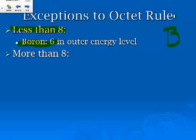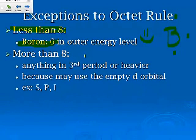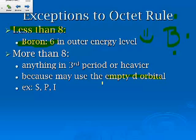If you look at boron on the periodic table, it has three valence electrons, and it will form a covalent bond at those three electrons. Now, if there's more than eight, technically it can be anything in the third period or higher, because they will use the empty d-orbital to kind of spread out.